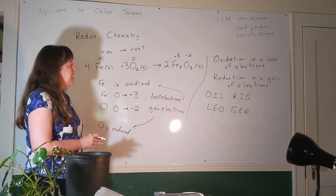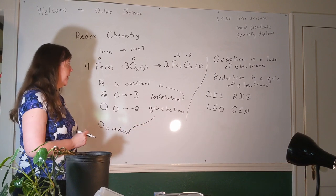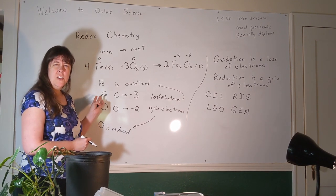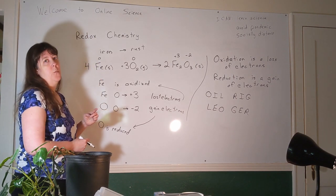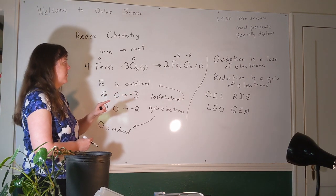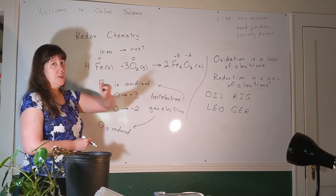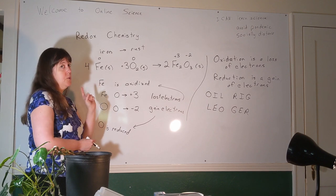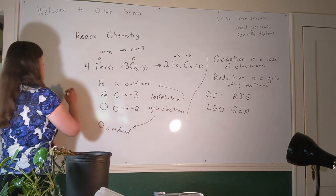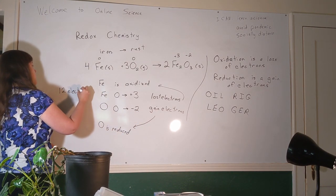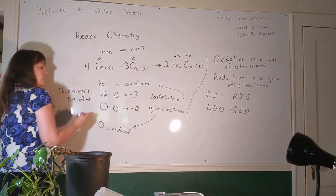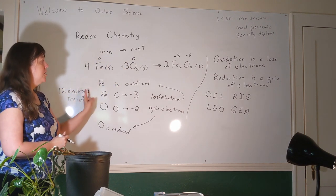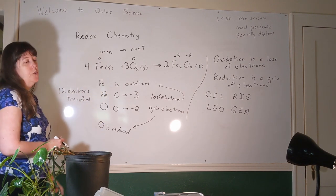How many total electrons were transferred? Each iron lost three electrons, and each oxygen gained two. The key is in the balanced equation: four iron atoms were oxidized (4 × 3 = 12 electrons lost), and six oxygen atoms were reduced (6 × 2 = 12 electrons gained). Twelve electrons were transferred in total. We identified this as a redox reaction, determined which element was oxidized and which was reduced, and found the total electrons transferred.